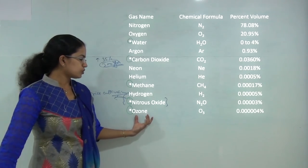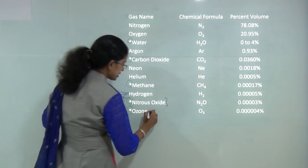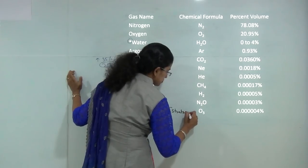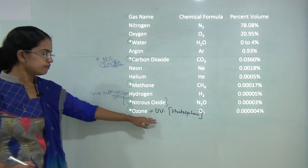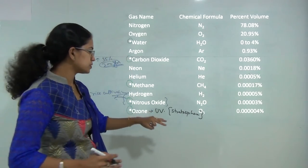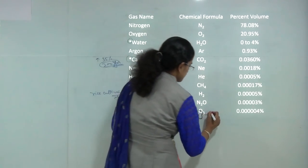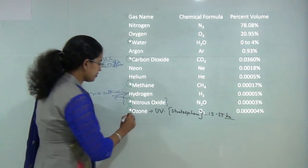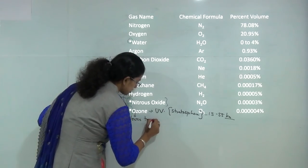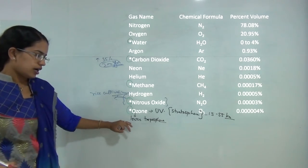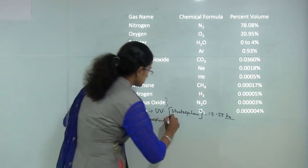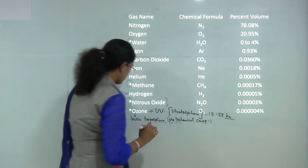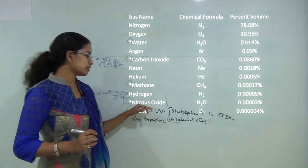Ozone is a major gas that prevents ultraviolet rays from penetrating into the earth. It is useful only if found in the stratosphere — the layer above the troposphere — at 15 to 55 kilometers, where it prevents excessive ultraviolet rays from reaching earth. However, if present in the lower troposphere it acts mainly as a pollutant. It is also a byproduct of photochemical smog found mainly around cities.